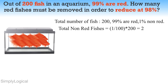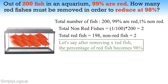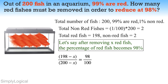That is 1 over 100 multiplied by 200, which equals 2. Currently, the percentage of red fish is 99% in the aquarium of 200 fish. So, total red fish equals 198 and non-red fish equals 2. Let's say after removing x red fish, the percentage of red fish becomes 98%. This can be represented in the form of an equation like this: 198 minus x over 200 minus x equals 98 over 100.